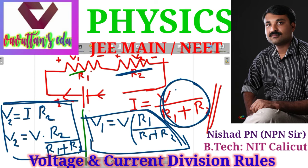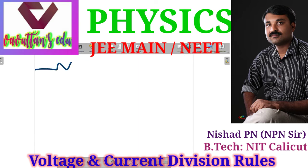V2 is equal to V multiplied by R2 divided by R1 plus R2. This is called the voltage division rule. This can be applied for any number of resistances connected in series.